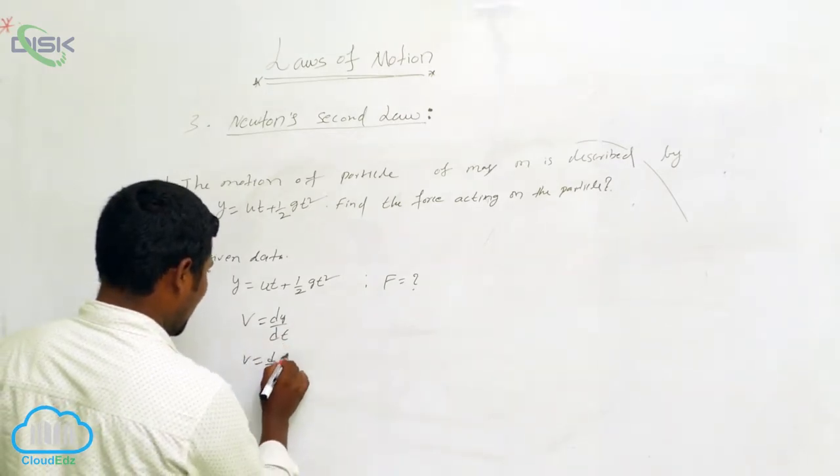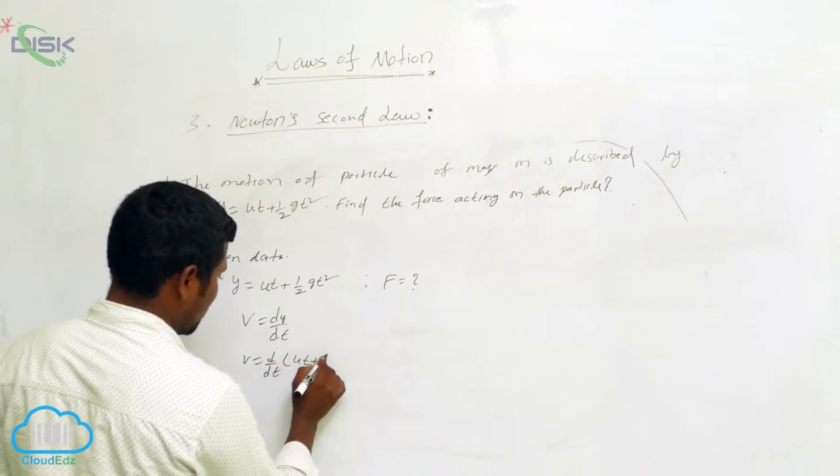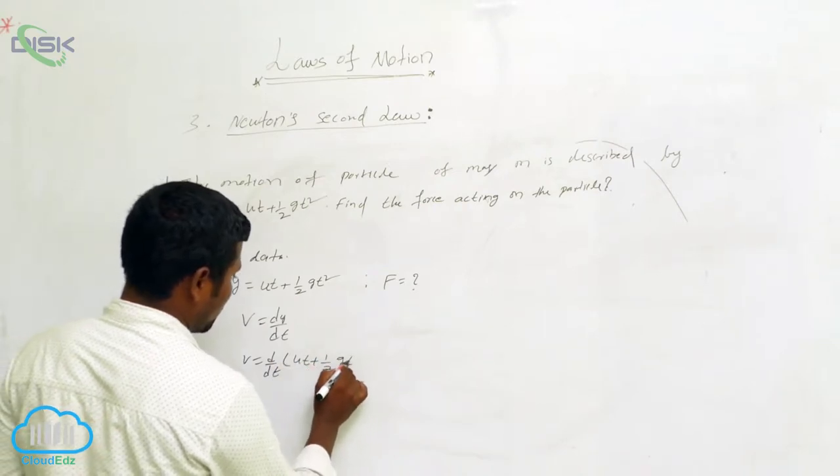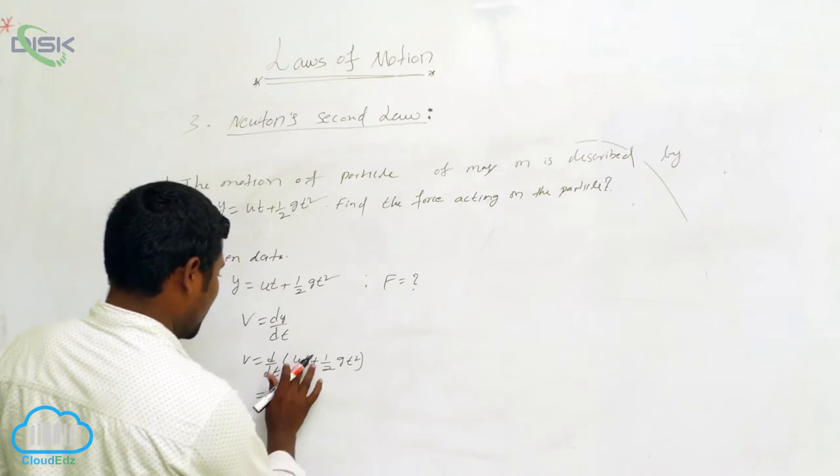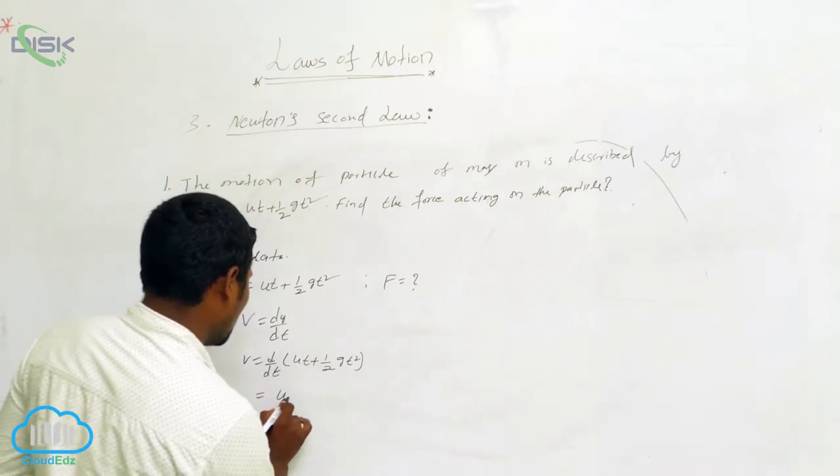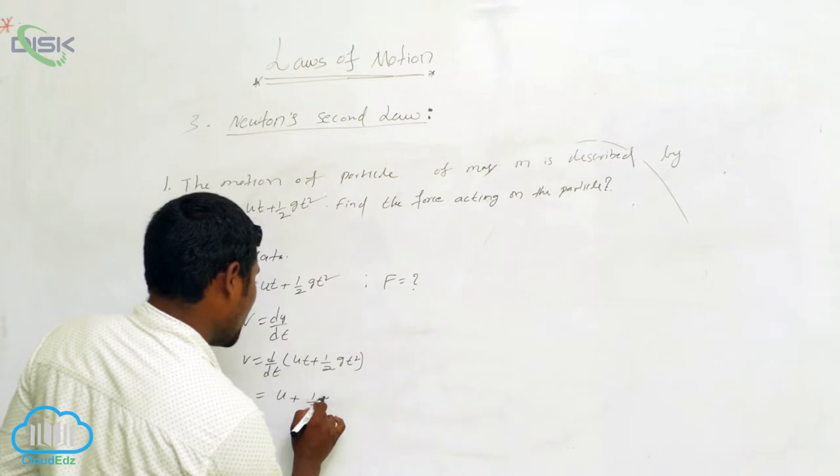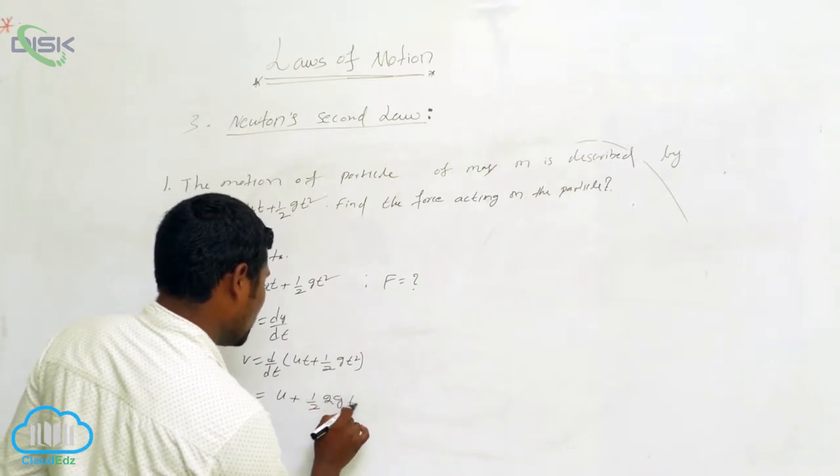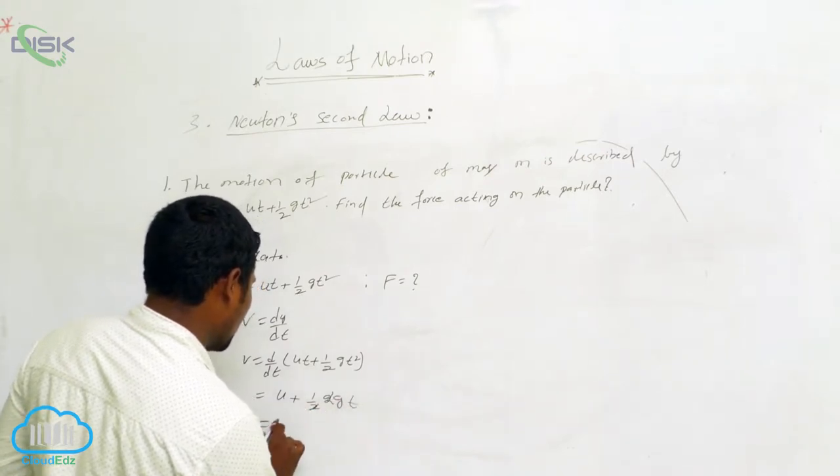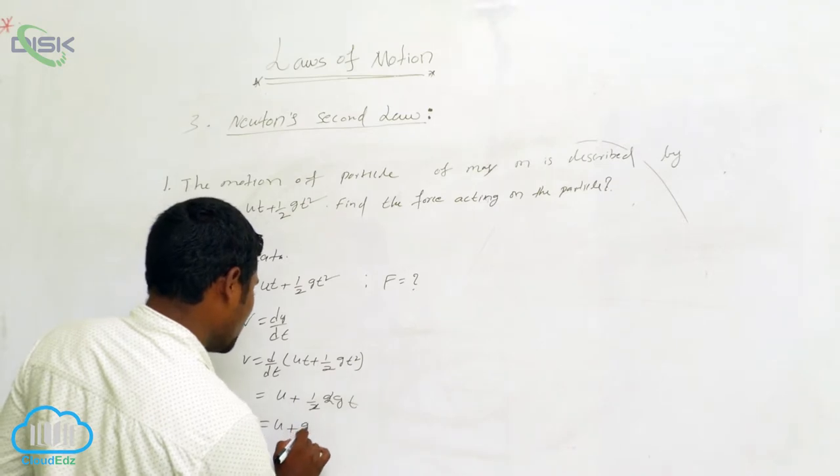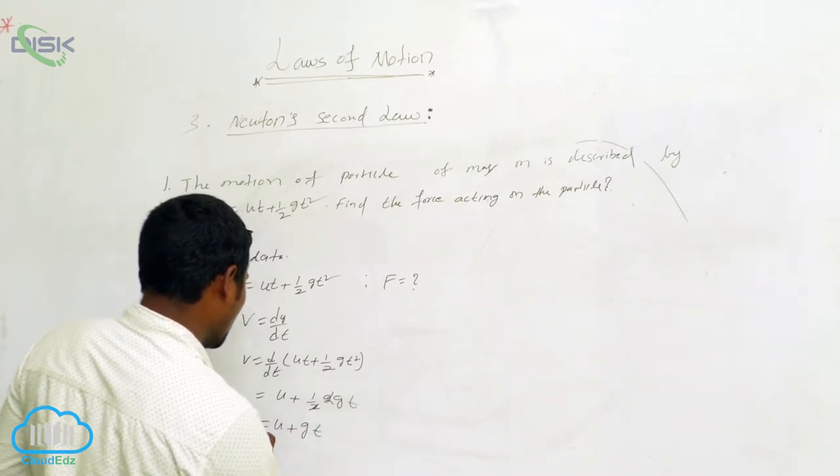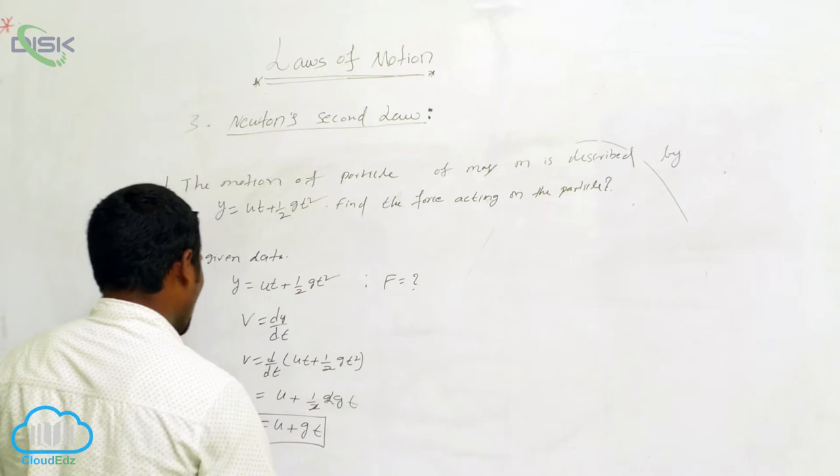y means how much is there? ut plus gt squared. Then with respect to t: u plus one-half, again 2gt. Then here 2 and 2 gets cancelled. Then what is remaining? u plus gt. This is equal to v.